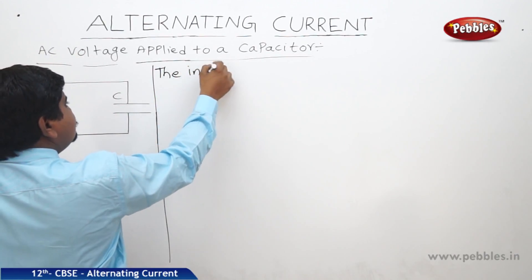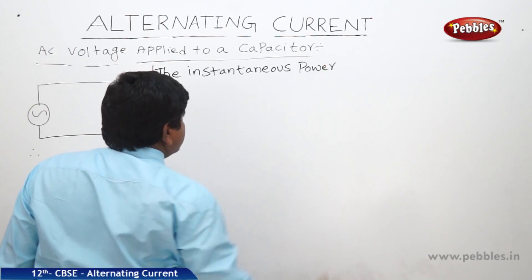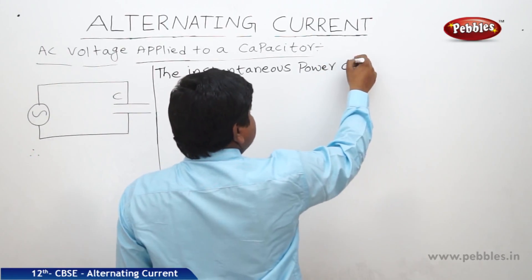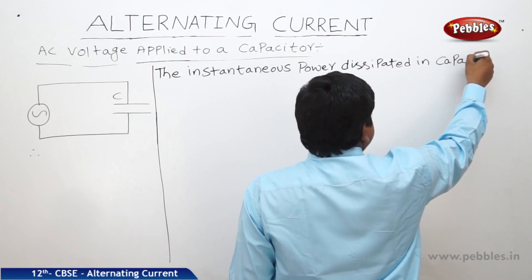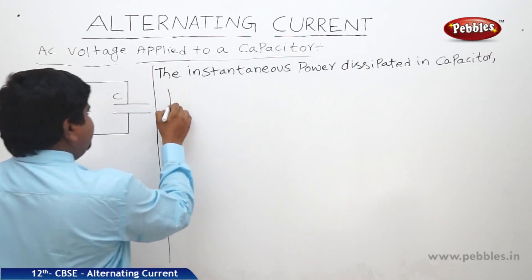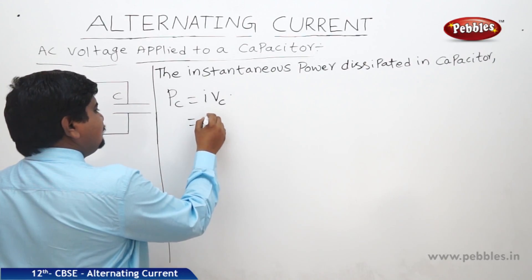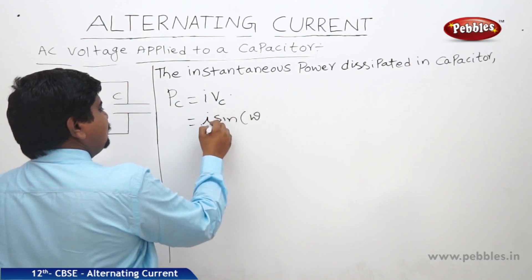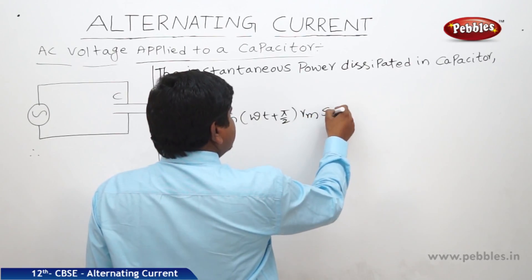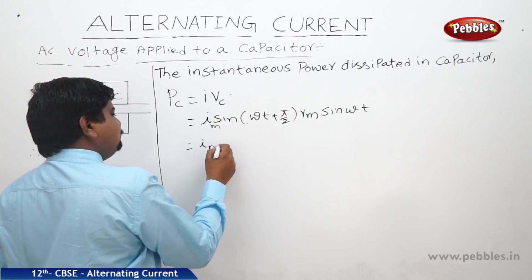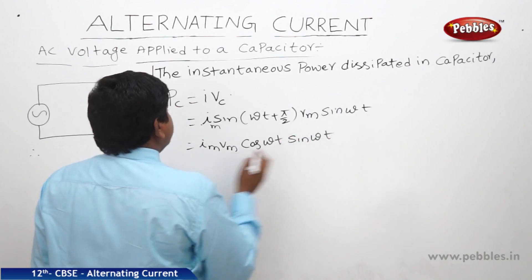The instantaneous power dissipated in capacitor can be written as PC equals IVC. What is I? I equals Im sine(ωt + π/2). VC is nothing but Vm sine(ωt). Therefore we can write Im Vm sine(ωt + π/2) which is cos(ωt) into sine(ωt) equals PC.